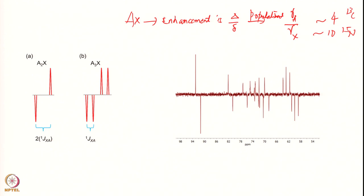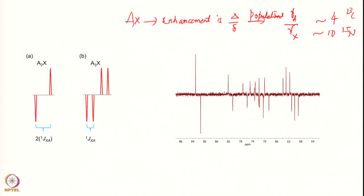However, we still have the problem of positive/negative lines — that continues. We have not gotten over that problem, but we have gotten over the selectivity issue. We no longer need to apply a selective pulse; we are applying a hard pulse. By applying the hard pulse, we get the same intensity enhancement and similar intensities for both lines. Earlier in SPI, the two lines had slightly different intensities; here we get similar intensities for both X spin lines.